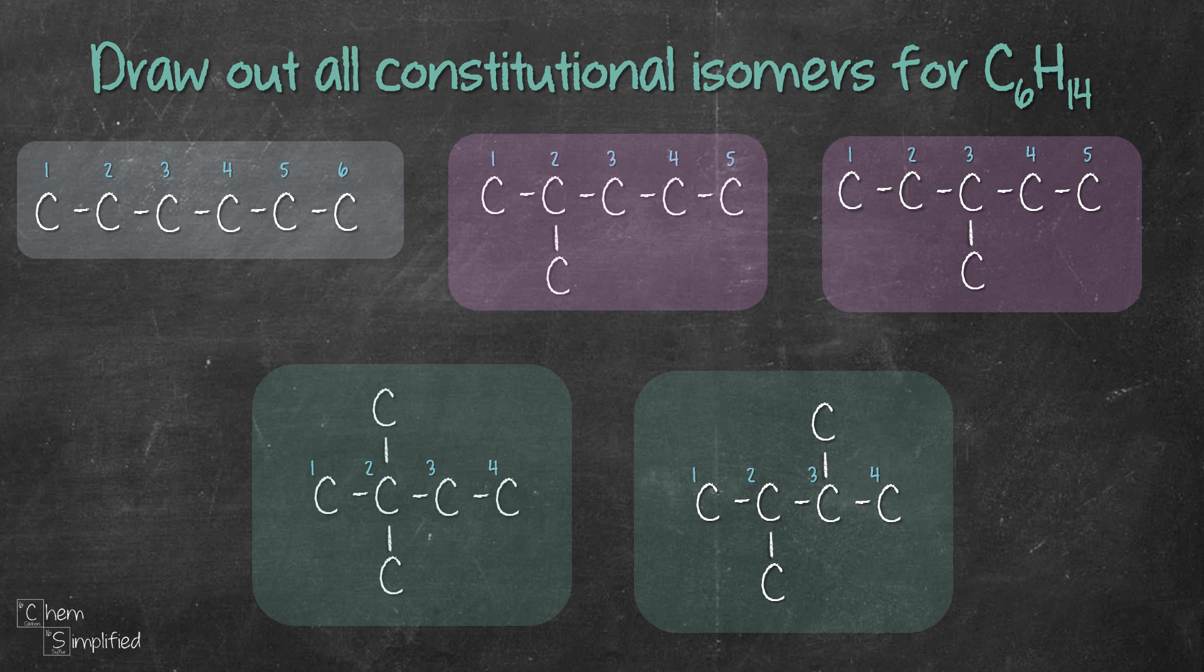Look, we have on the left hand side, the 2 substituent is on carbon 2. On the right hand structure, the 2 substituent, 1 is on carbon 2, 1 is on carbon 3. So these 2 are actually isomers. So we'll keep them.